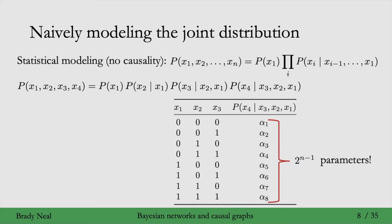For general n, we end up with 2 to the n minus 1 parameters for the largest factor, for the factor that we're conditioning on everything before it. Okay, so just in statistical modeling, we already have a problem. And that's that we have an exponential number of parameters if we want to model these distributions with these tables right here.